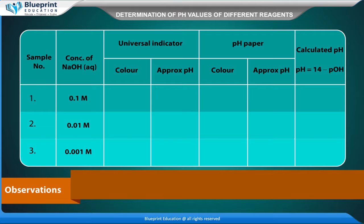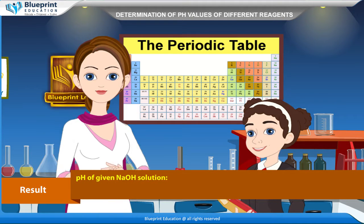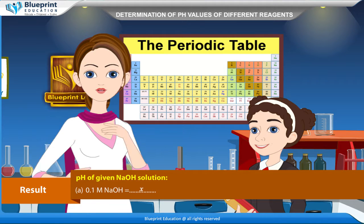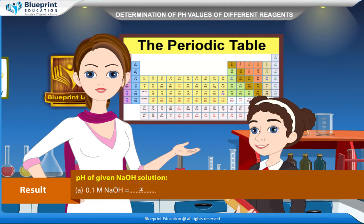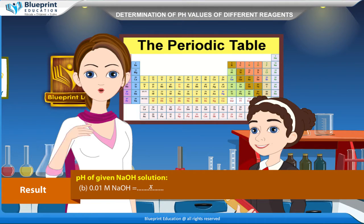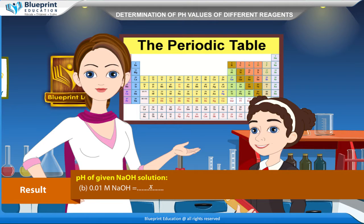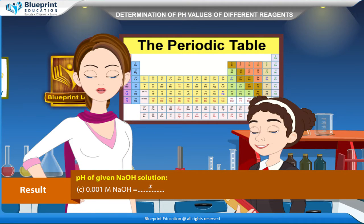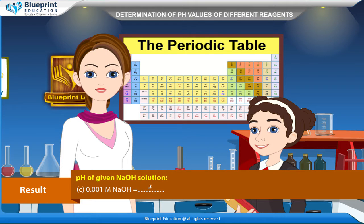Observation table columns: Sample number, Concentration of NaOH aqueous solution, Universal indicator color, Approximate pH, pH paper color, Approximate pH, and Calculated pH. Calculated pH formula: pH = 14 - pOH, where pH + pOH = 14, and pOH = -log[OH-].